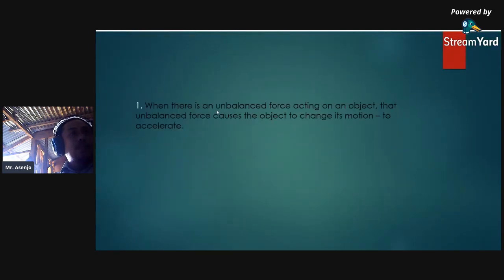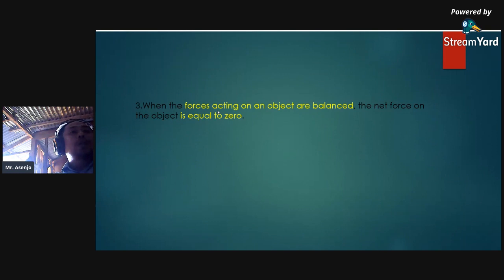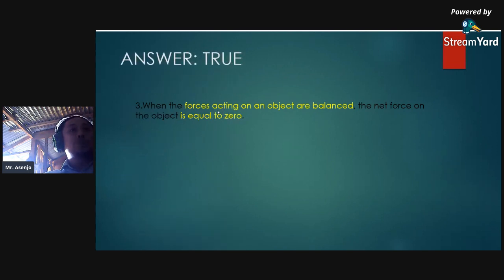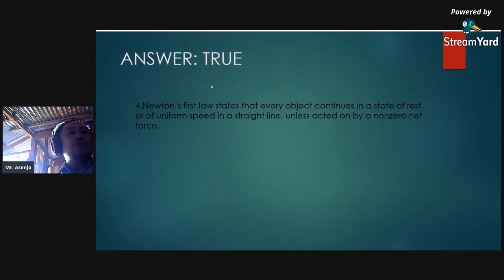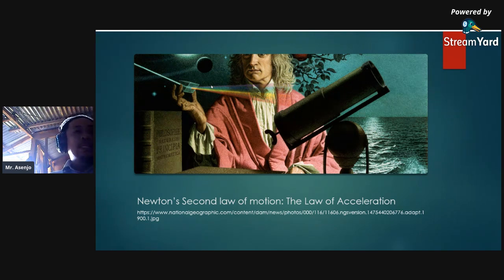Second question: when the forces acting on an object are balanced, the net force on the object is equal to zero. Of course, this is very true. Third: when the forces acting on an object are balanced, the net force is equal to zero — still true. Number four: Newton's First Law states that every object continues in a state of rest or uniform speed in a straight line unless acted on by a non-zero net force. That is true.